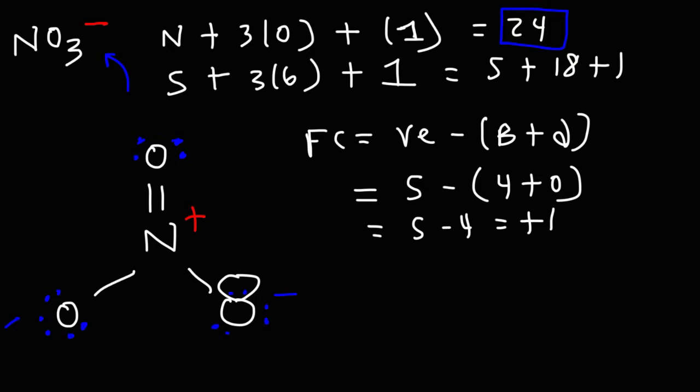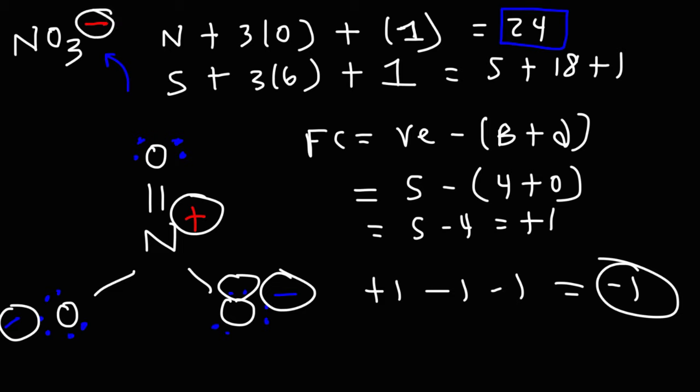Now notice what's going to happen. If we add up all the charges, plus one, minus one, minus one, this will equal negative one. And this is important because it represents the overall charge on the polyatomic ion, which makes sense.